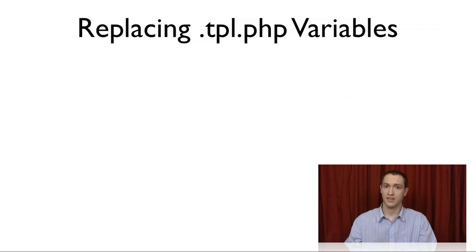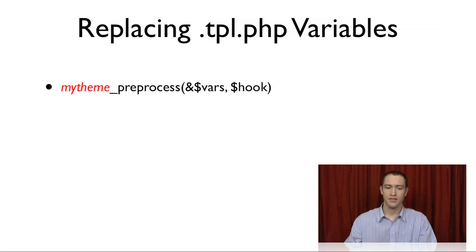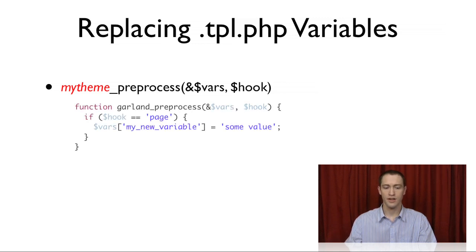Let's get started right into step two of the three steps: replacing tpl.php variables. When you want to provide a variable to a tpl.php file, it's a really easy process. You simply need to make a new function in your template.php file with the name of your theme prefixed on the name of the function, then underscore preprocess. This function takes two arguments: vars, and the name of the hook that's going to be called.